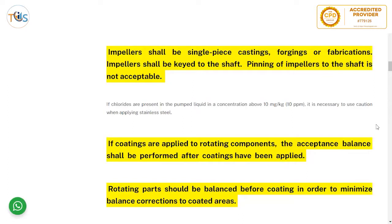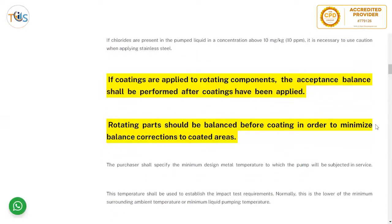If chlorides are present in the pumped liquid at a concentration of 10 milligrams per kilogram (10 ppm), it is necessary to use caution when applying stainless steel. Normally, hydrostatic tests are done with water having chloride content less than 50 ppm. However, if you are using a stainless steel pump and chlorides are present, to be safe the chloride content should be less than 10 ppm.